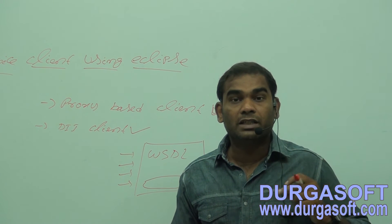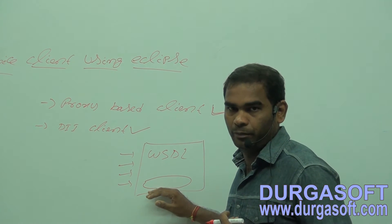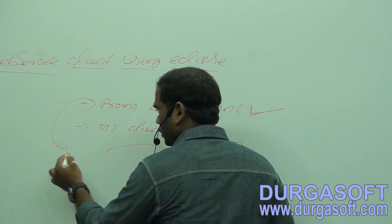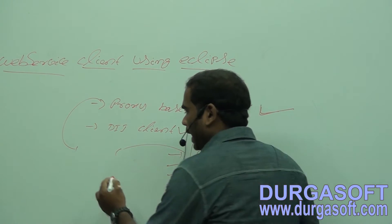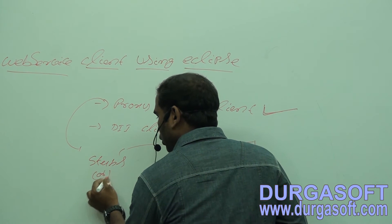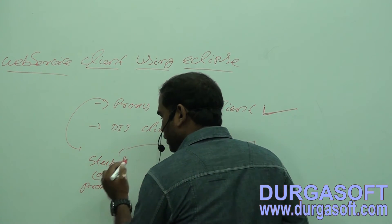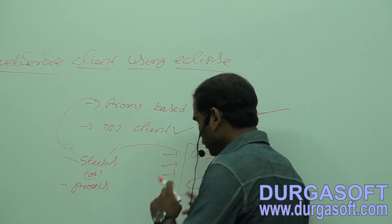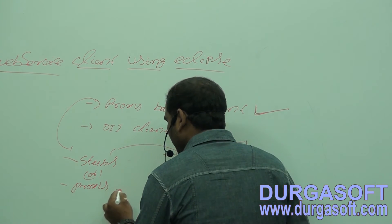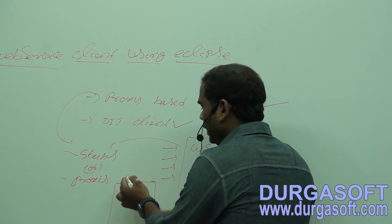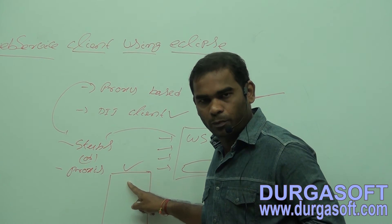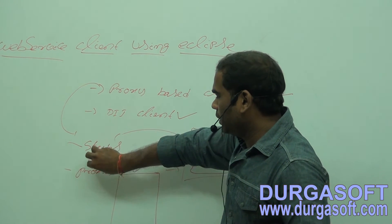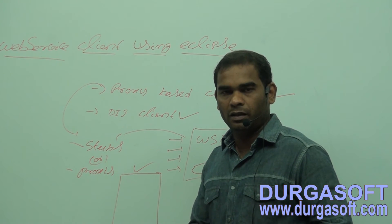The location where your service is running is called the endpoint URL. Using this WSDL file, the client will generate proxies or stubs if it is a proxy-based client. After generating these stubs and proxies using the WSDL file, the client will create one client application — maybe a web client or a standalone program. In that program, the client will use the generated stubs to invoke the web services.